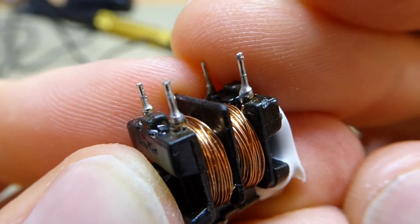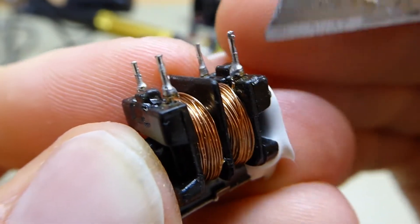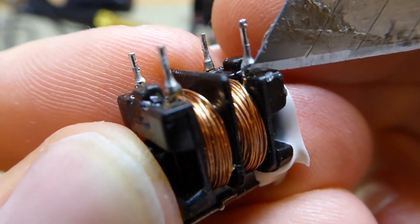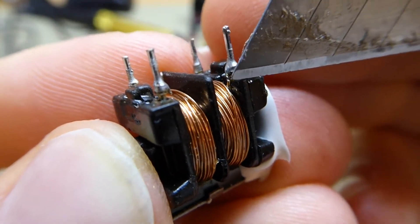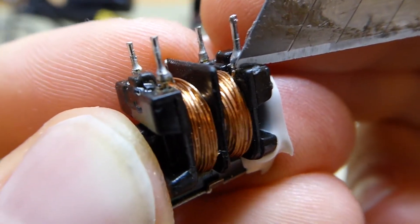I'm not quite sure how well you can see it on camera, but the enameled wire here is cut just before it goes to the pin. It's soldered onto the pin, and it looks like it's been cut here.